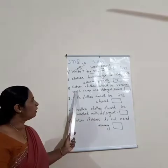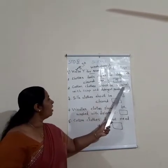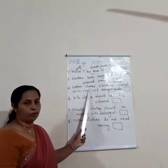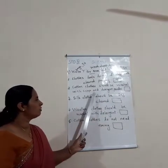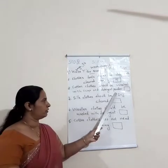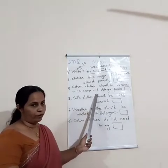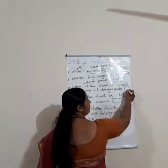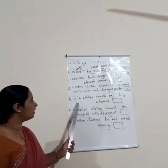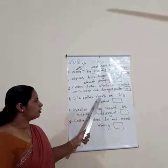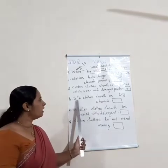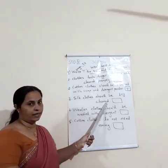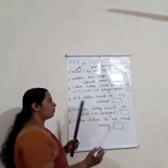Next statement: cotton clothes should be washed with soap and detergent powder — this is a true statement, so write T. Third statement: silk clothes should be dry cleaned — this is also a true statement, so write T.